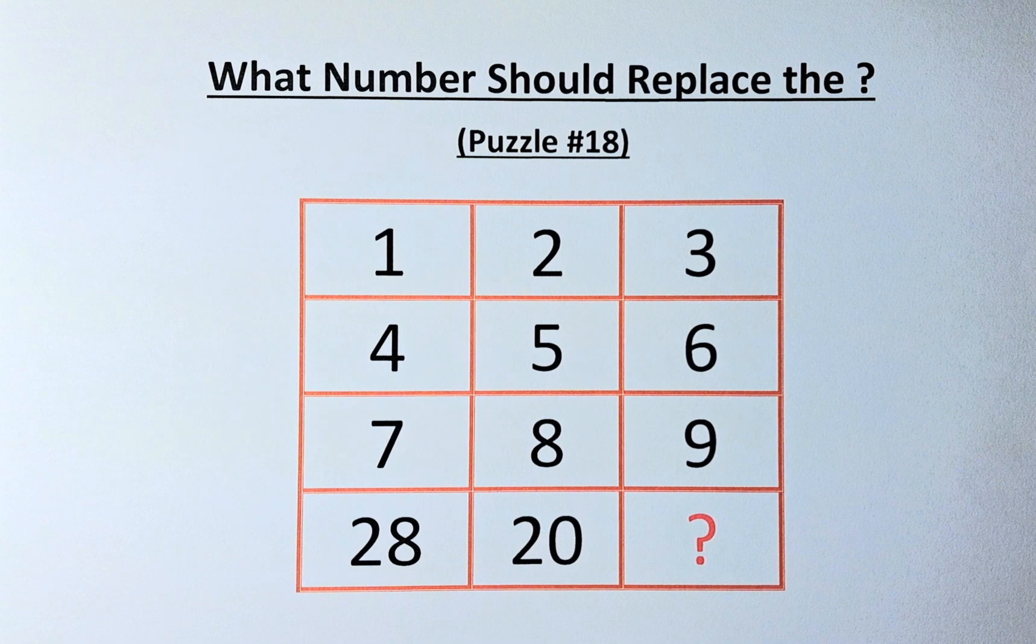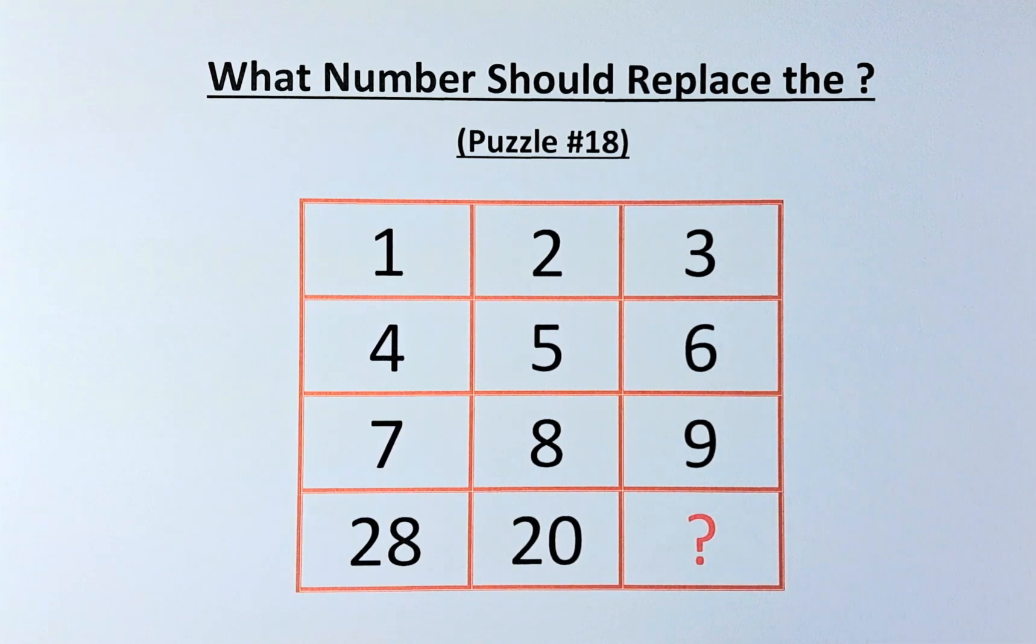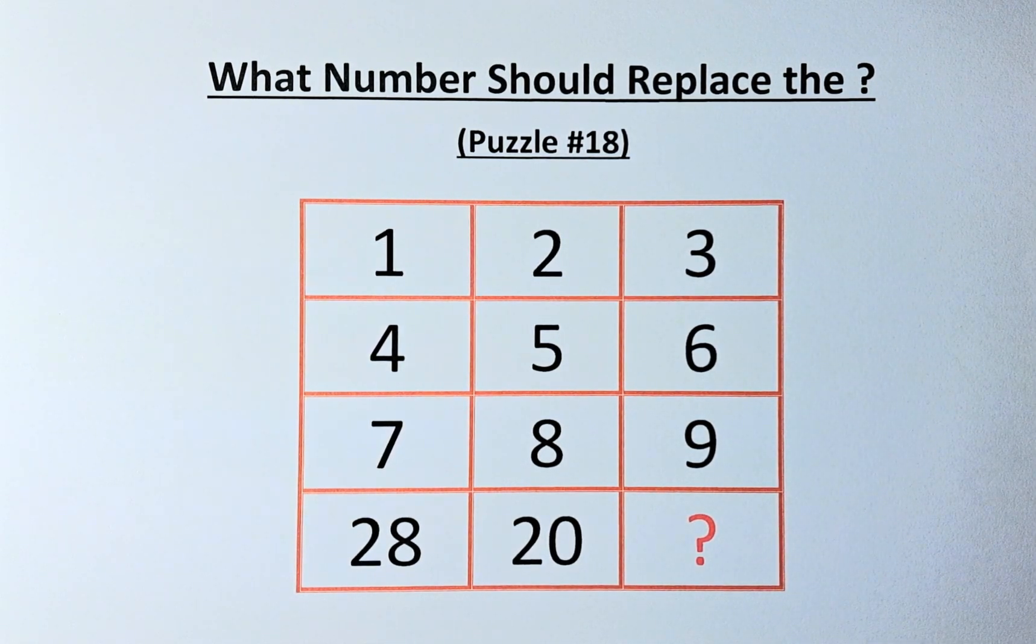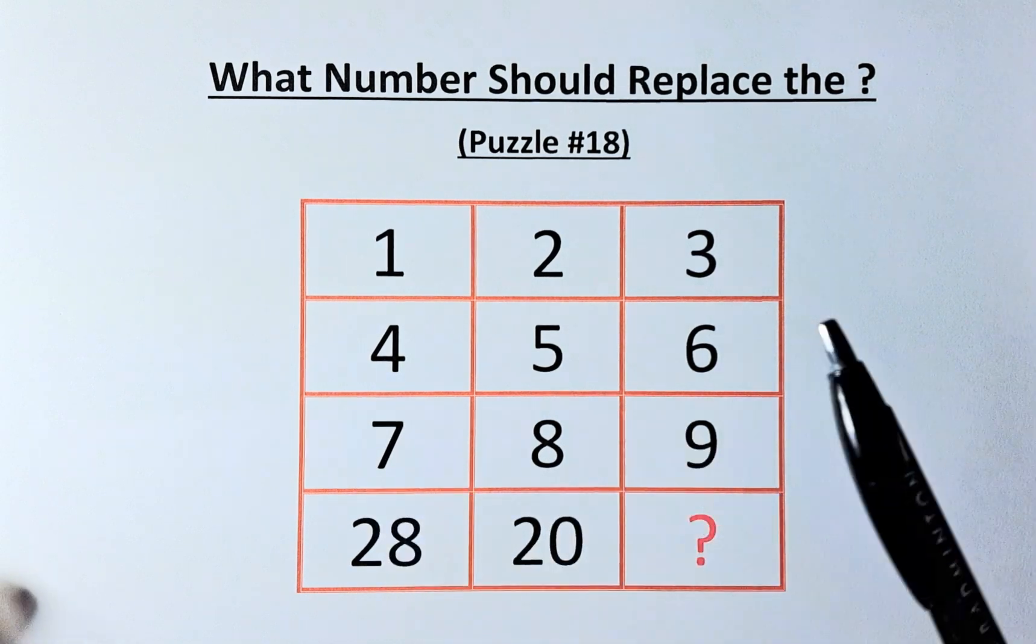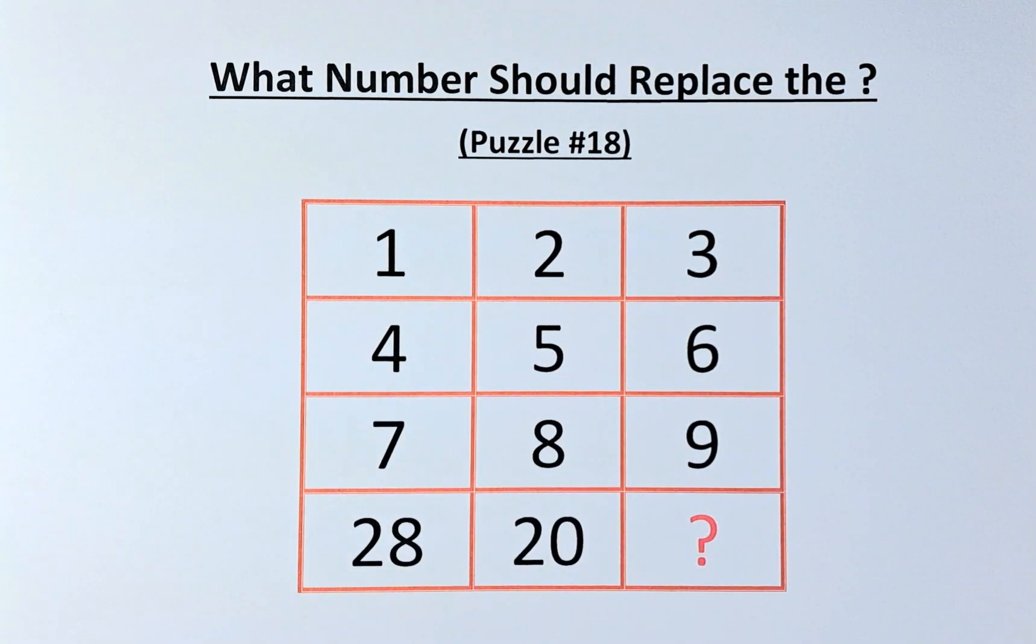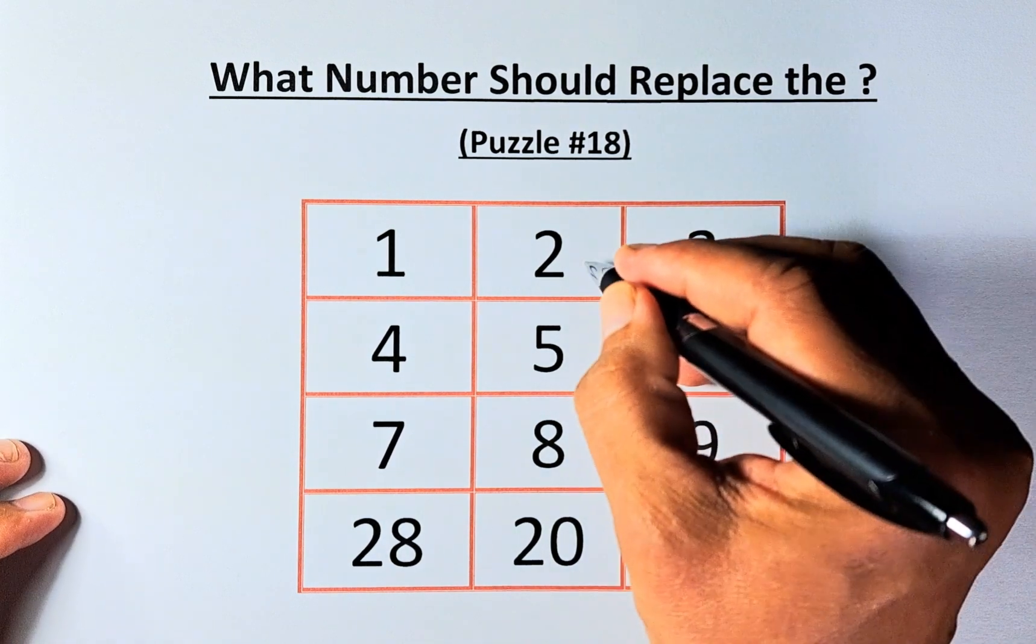This puzzle has two solutions. We'll do the easy one first. If we look at the rows, 1, 2, and 3 is just the average. 1 plus 3 is 4, divided by 2 will give you 2.